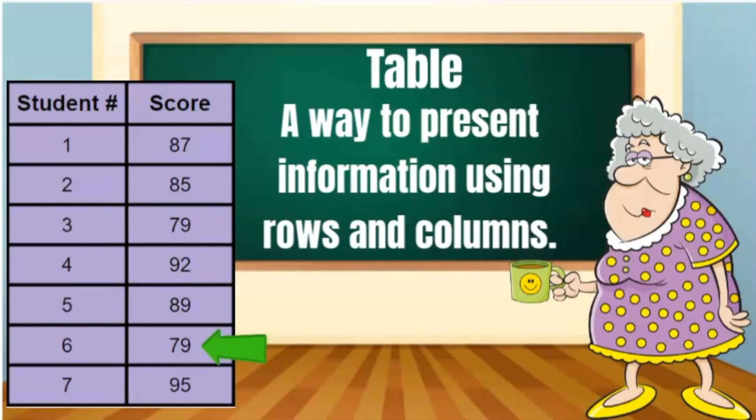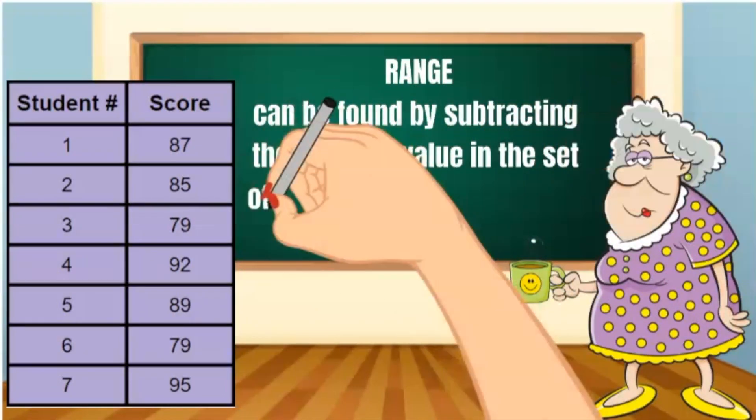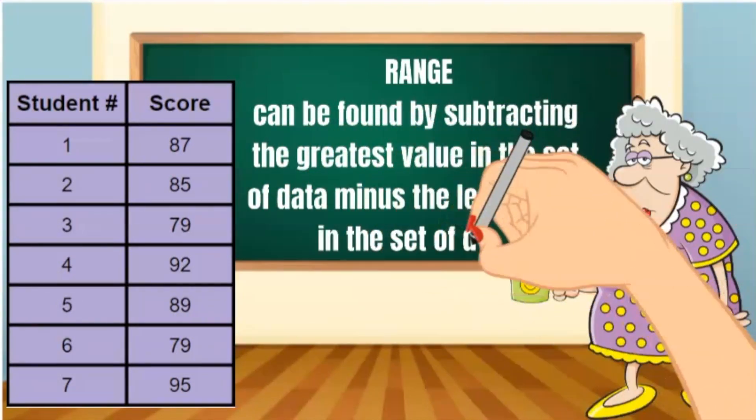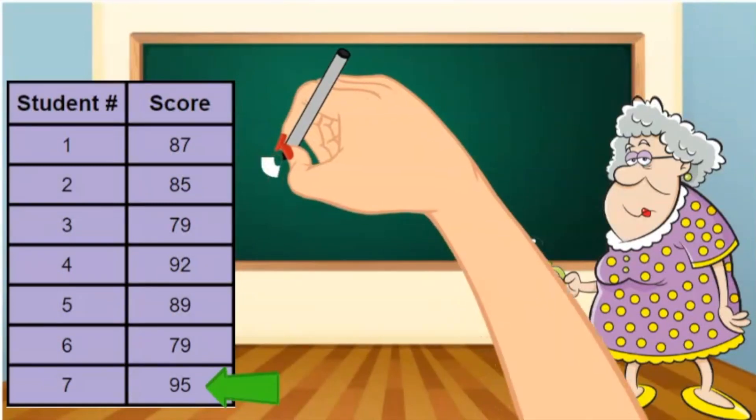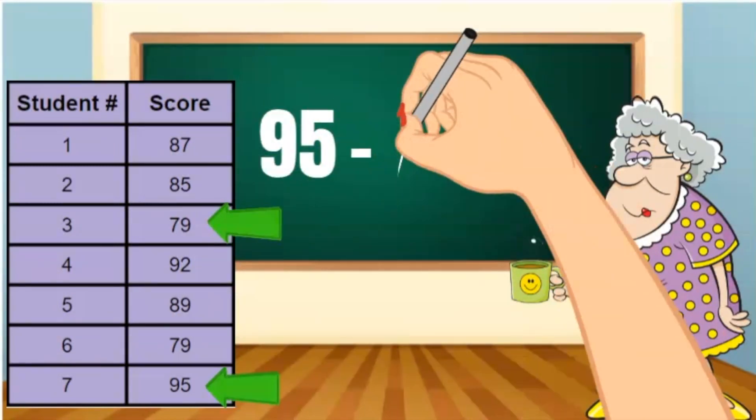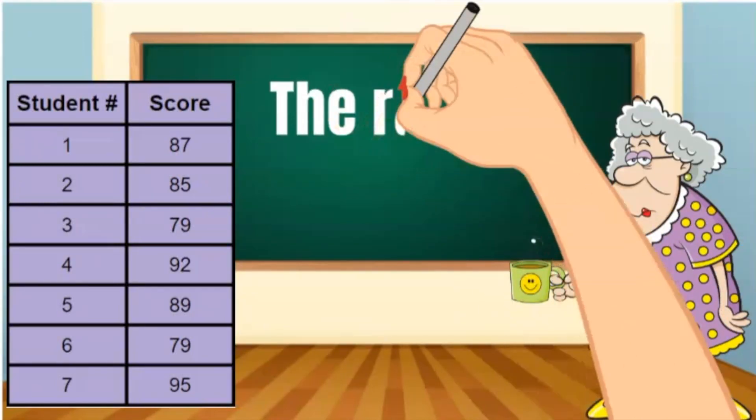I'm sure everyone forgot, so I will tell you again. The range of a set of data can be found by subtracting the greatest value in the set of data minus the least value in the set of data. The greatest value represented in this data is 95. The least value represented is 79. 95 minus 79 equals 16. The range for this set of data is 16.